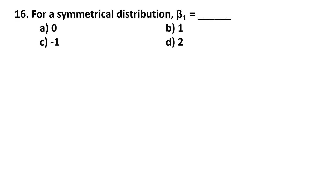Question number 16. For a symmetrical distribution, beta1 is equal to dash. Options: 0, 1, minus 1, or 2.